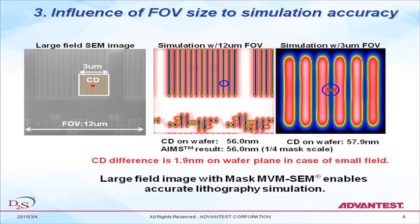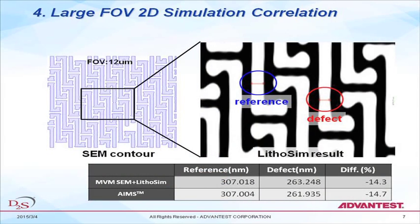We measured CD with both our solution and AIMS, and both CD values are well matched. However, in the case of the smaller field of view, the CD difference is 1.9 nanometers. Therefore, a large field of view image with the mask MVM SEM enables accurate lithography simulation. For the simulation correlation with AIMS, we simulated two positions — a reference position and a defect position — and both simulated values are quite well matched. The defect position shows a slight difference, but the simulation is applicable.